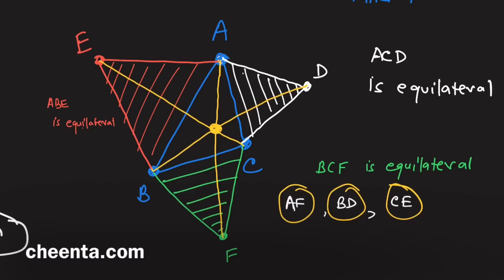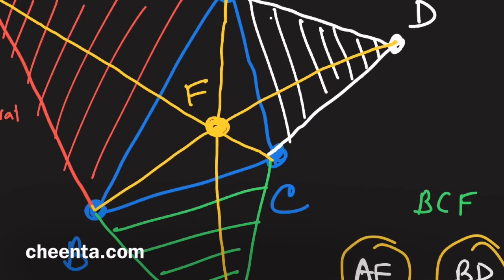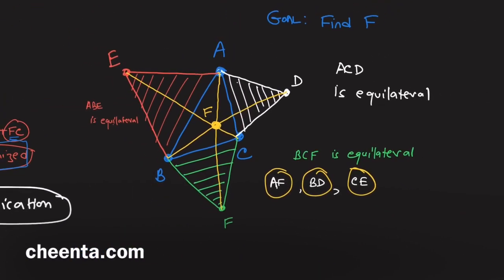This is the point that you're interested in—this is the Fermat point. Let's call this F. This particular point F will do the trick. F has that property.